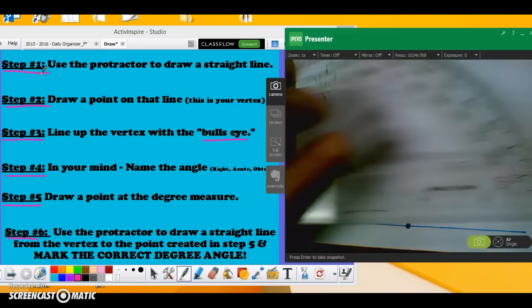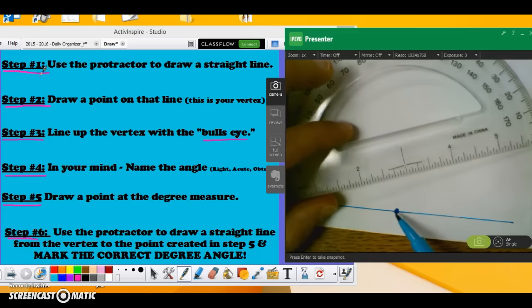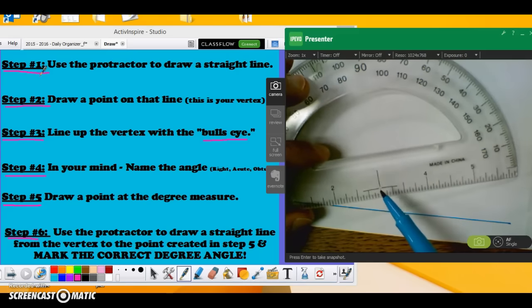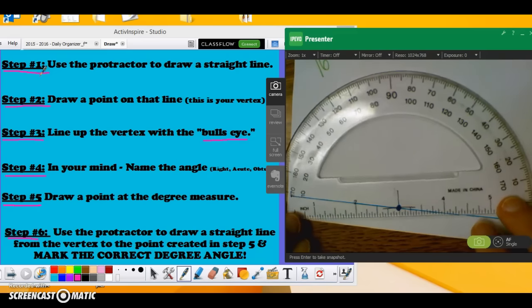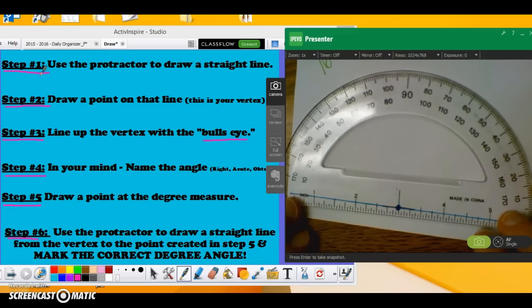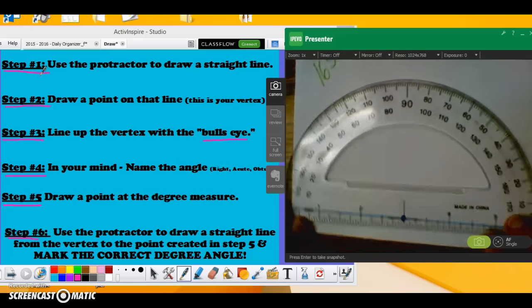Now I need to take my protractor again and I need to line up the vertex, which eventually this point right here becomes our vertex, with the bullseye on that bottom part of the T. So I've lined it up. I also want to make sure that the T is lined up so that the line is flat right there with the protractor.